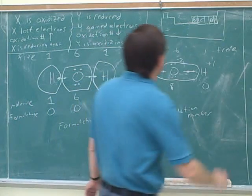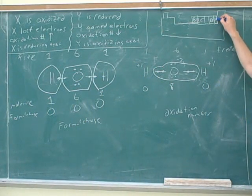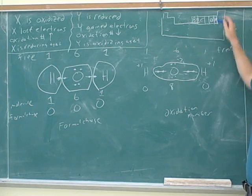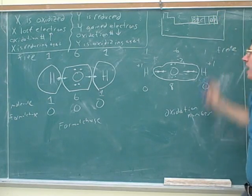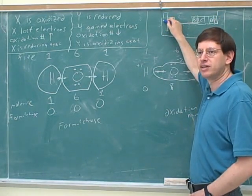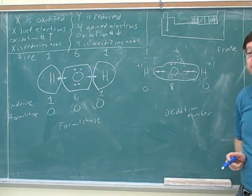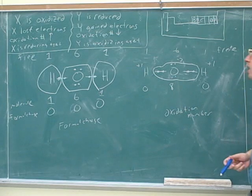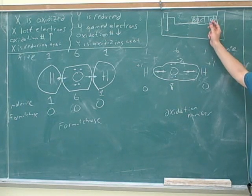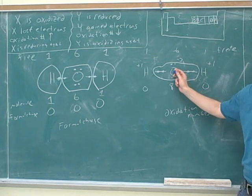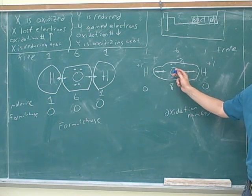Suppose you have an element in the column next to oxygen — what would its oxidation number tend to be? Minus 1, because it tends to gain 1 electron. And what about elements in the far left column? Plus 1, because they tend to lose 1 electron. Oxygen tends to have an oxidation number of negative 2 because it tends to gain 2 electrons and tends to be the most electronegative element in the compound.